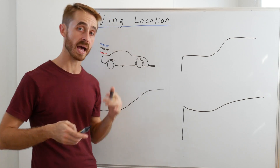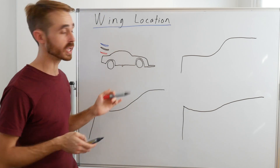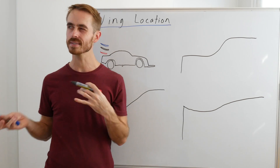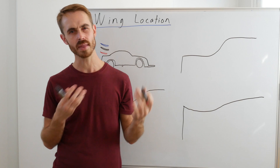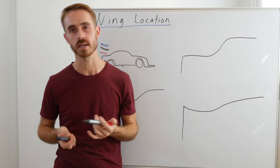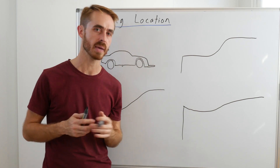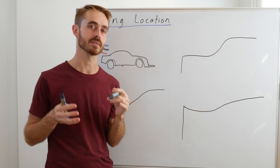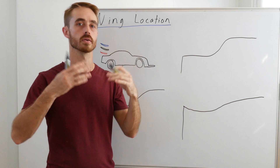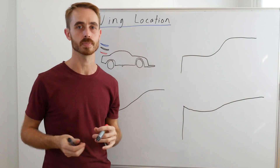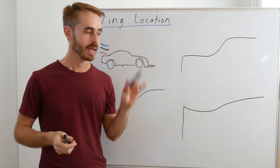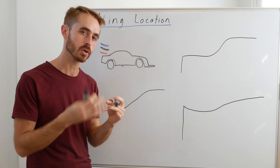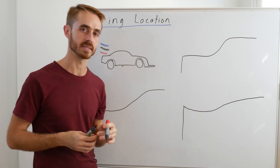Today I'm going to be talking about rear wing location on race cars. This is something I see a lot of rather weird explanations about on the internet, so I'm going to try and clear up a few bits and pieces that I often see explained incorrectly. This shouldn't be too long a video — we're just going to go through some of the basics.